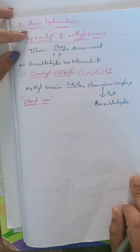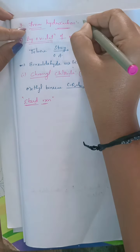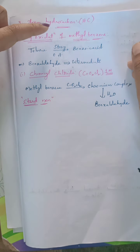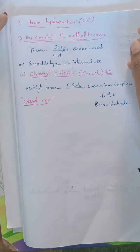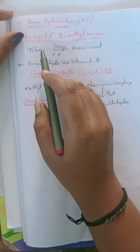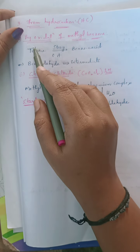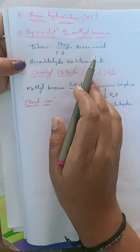The third preparation method for aldehydes is from hydrocarbons — compounds containing only hydrogen and carbon. There are several methods. If you want to prepare an aromatic aldehyde, take an aromatic hydrocarbon; for aliphatic compounds, take an aliphatic hydrocarbon. There are three different methods under this. The first is by oxidation of methyl benzene (toluene).